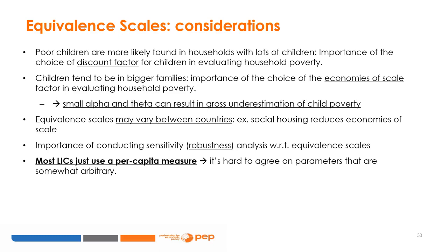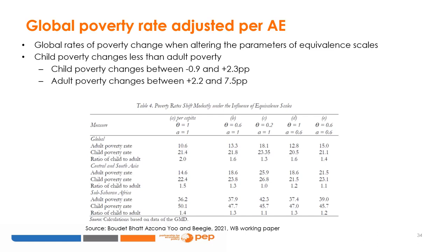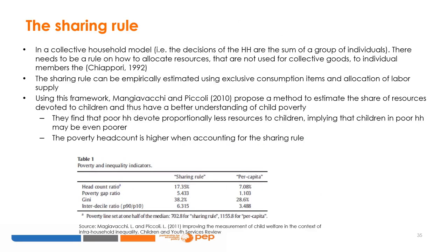Equivalence scales can also vary between countries or over time. It is important to conduct a sensitivity analysis when using equivalence scales. However, remember that most low-income countries use a per capita measure without equivalence scales. Global poverty rates change when applying equivalence scales, but child poverty changes less than adult poverty — using equivalence scales versus per capita will generally show lower poverty rates for children. An implication of household collective models is that there needs to be a rule on how to share resources. Using this framework, Mangiavacchi and Piccoli, in their work of 2010, find that poor households devote proportionally less resources to children, implying that children may be even poorer, and that the poverty headcount using the sharing rule is higher.